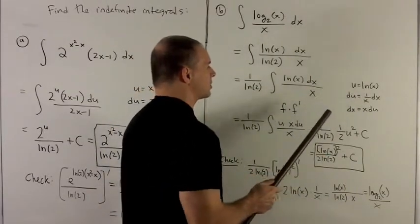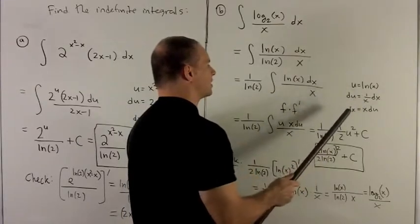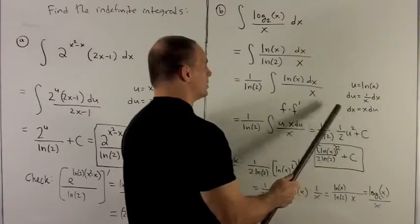So we target the f out. u is going to be equal to natural log of x. Du is 1 over x dx. dx is x du.